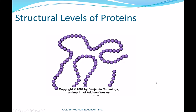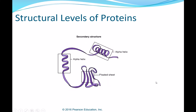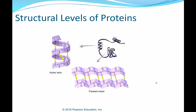Next is secondary structure. In most proteins, parts of the polypeptide chain are coiled or folded, forming twists and corrugations — this is secondary structure. One kind is the alpha helix, where the chain twists. Another is the pleated sheet, where the chain folds back on itself or where two regions lie parallel. Secondary structure results from hydrogen bonding between oxygen and nitrogen atoms along the polypeptide backbone, causing parts of the protein to twist or fold back upon itself.